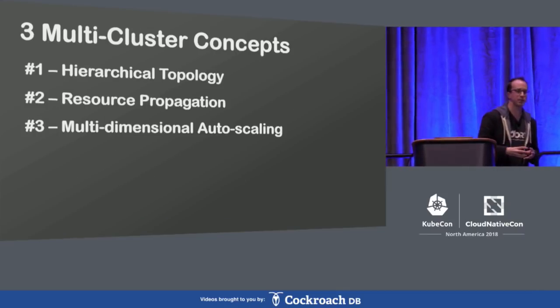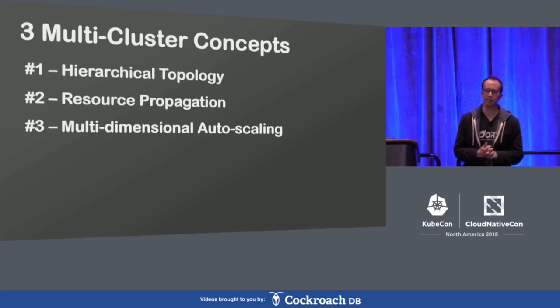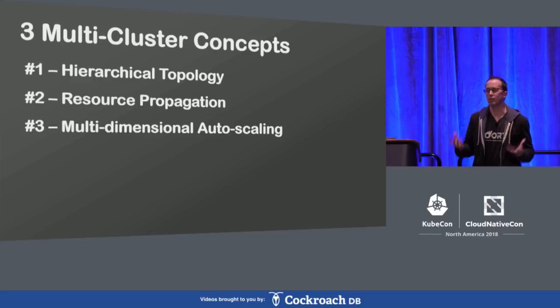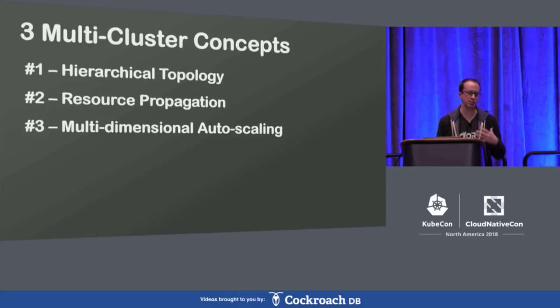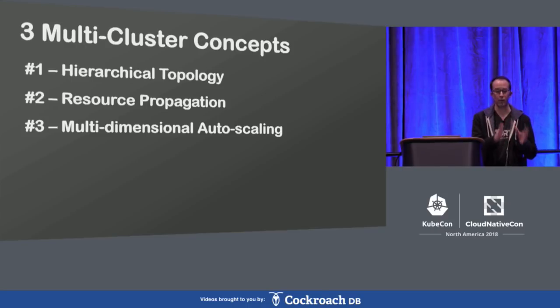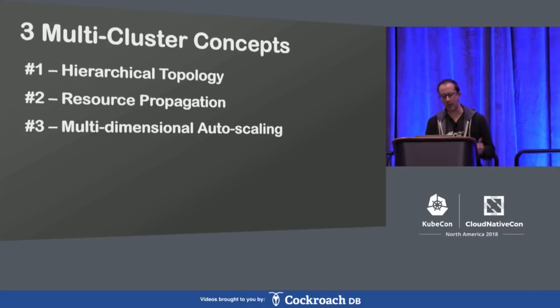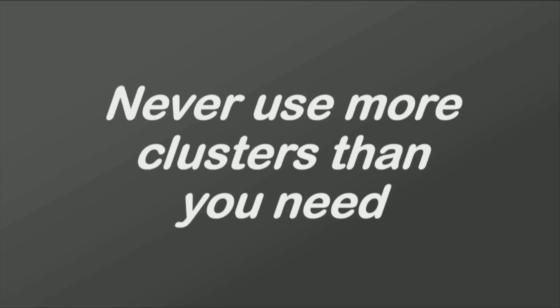Along the way we developed three key concepts. Hierarchical topology: probably the most important when thinking about applications spanning clusters — always think about what's at the root of your tree, what's that data, what's at the leaves, and what's in between. Resource propagation: rather than touching many points in the network, touch one point and propagate out. Multidimensional autoscaling: scale out and back in your hierarchy, not just up and down within a single cell. And the rule of thumb throughout: always ask why. Why go from one to two, two to ten, ten to a hundred, ten to a thousand? Unless you can answer that with certainty, you probably don't want to take that jump. Never use more clusters than you need.